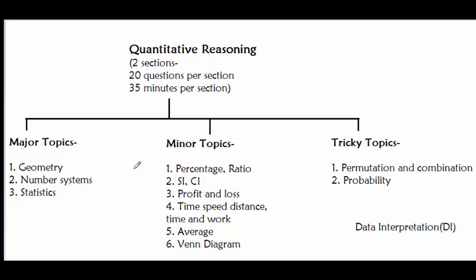The major topics of quantitative reasoning are geometry, number systems, and statistics. The tricky topics are permutation and combination, and probability.